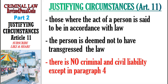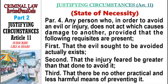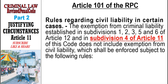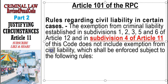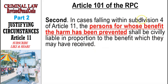However, there is an exception — Paragraph 4, state of necessity. We must read it in conjunction with Article 101 of the Revised Penal Code on civil liability in certain cases. Article 101 states that the exemption from criminal liability under subdivision 4 of Article 11 does not include exemption from civil liability. So in state of necessity, there is still civil liability. The persons for whose benefit the harm has been prevented shall be civilly liable.